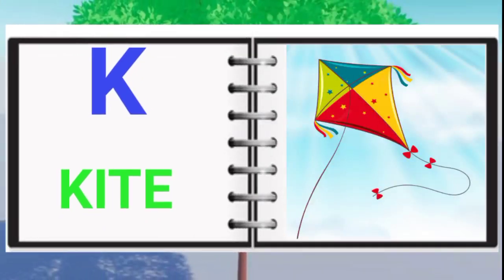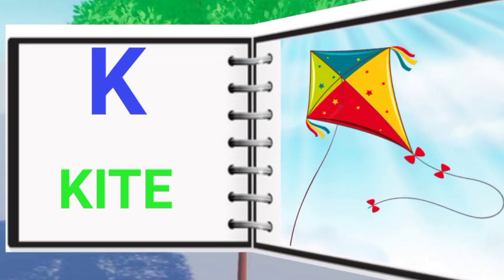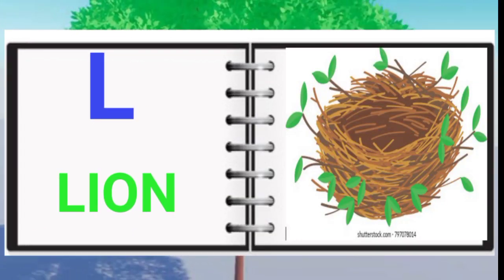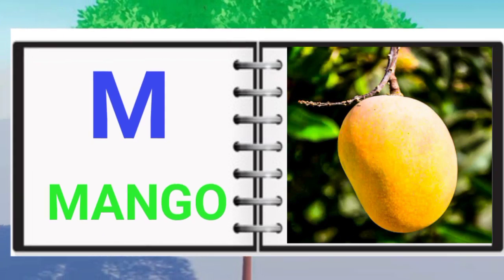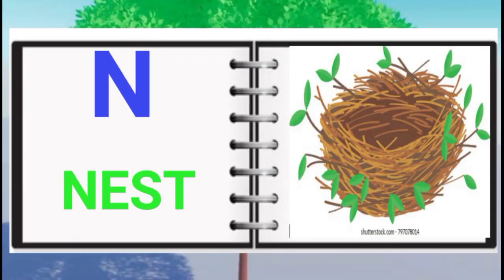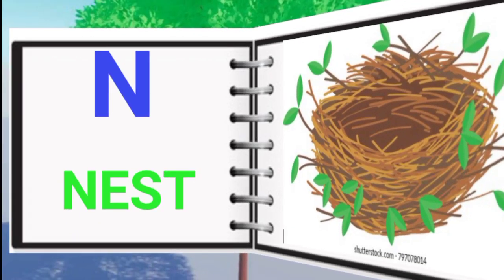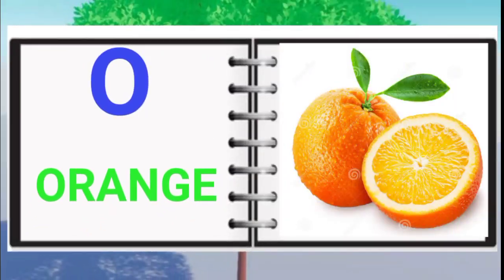K for child, L for lion, M for man, N for nest, O for horse.